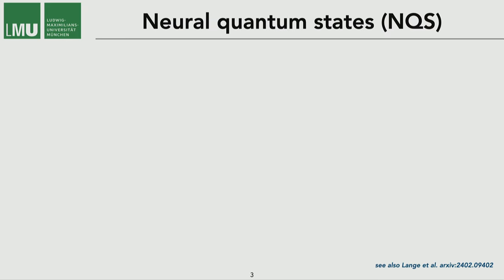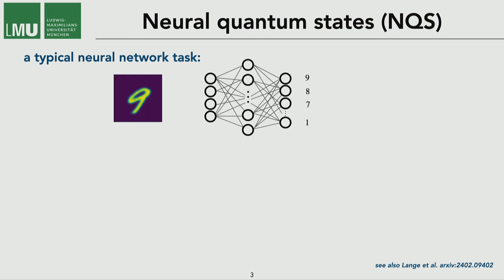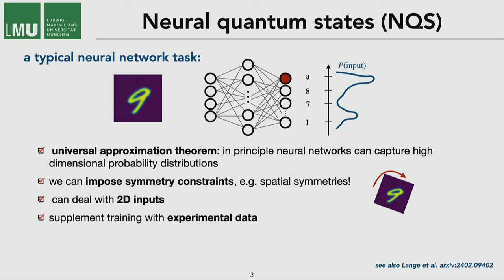That's where neural quantum states enter the stage. I decided to do a little bit different introduction and go a step back and just consider a typical neural network task, which is for example image classification. Because with this very basic machine learning task we can already see some of the strengths of neural networks. The first one is the universal approximation theorem which states that in principle neural networks can capture very high dimensional and very complicated probability distributions.